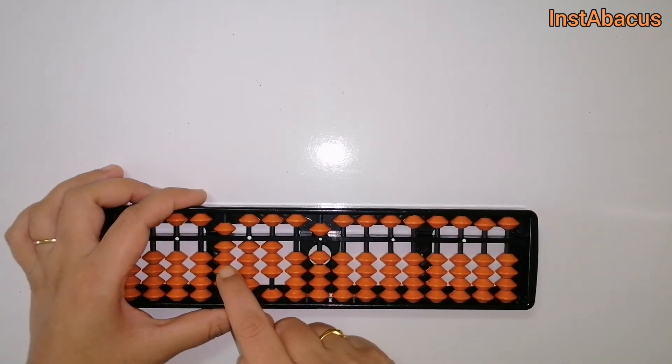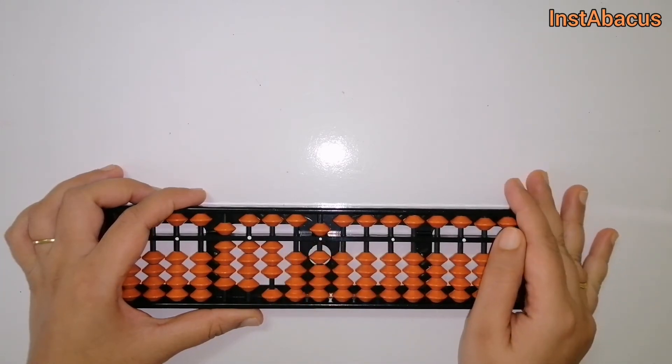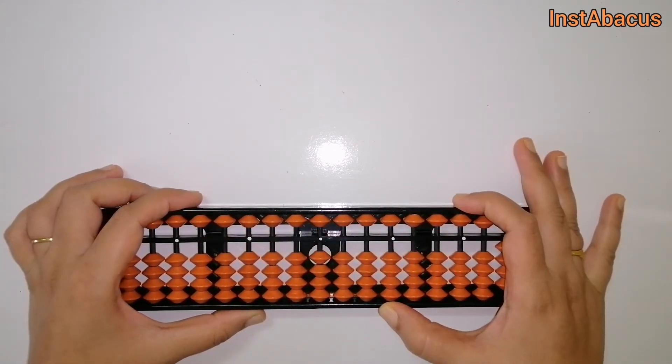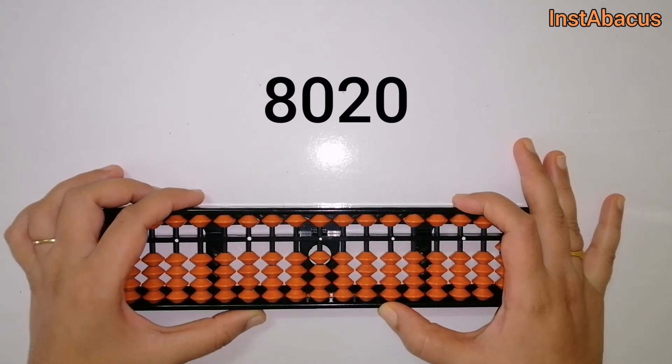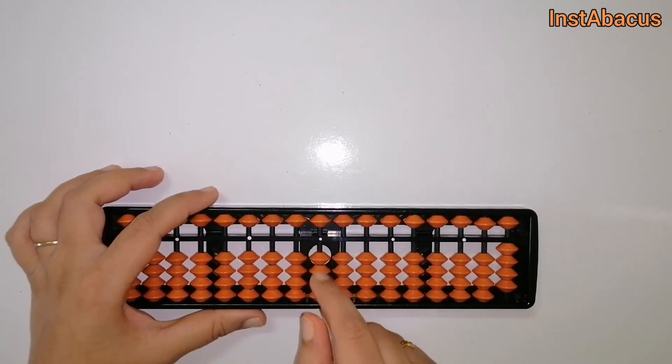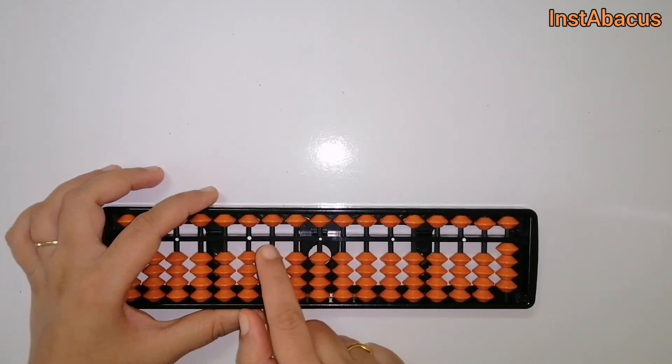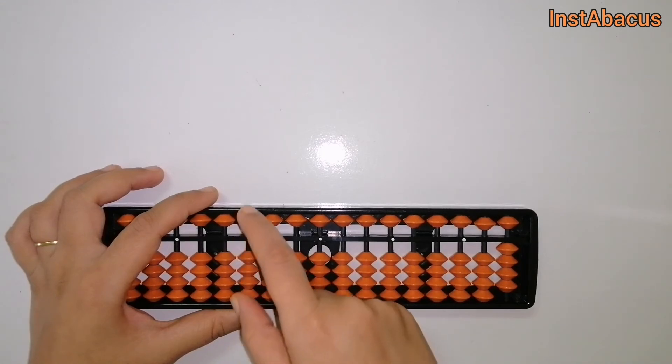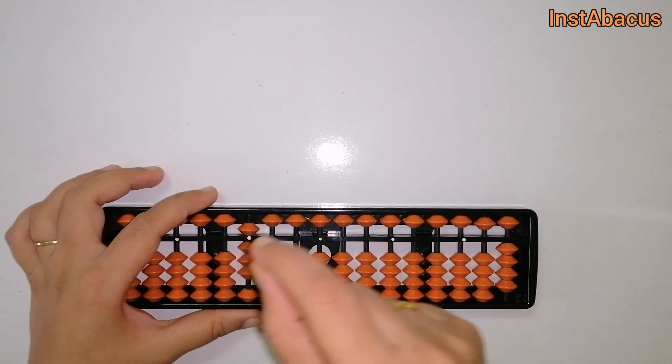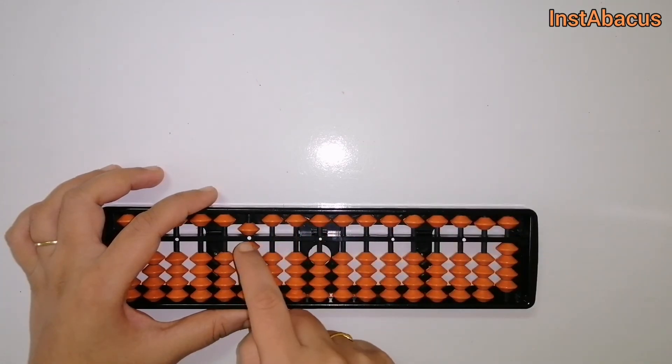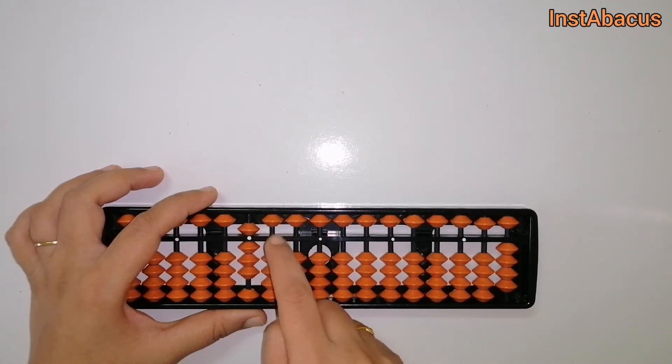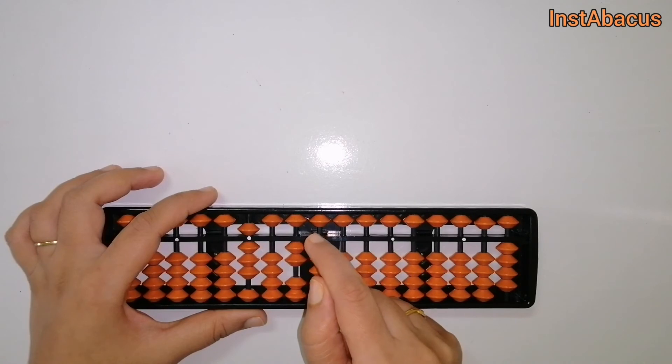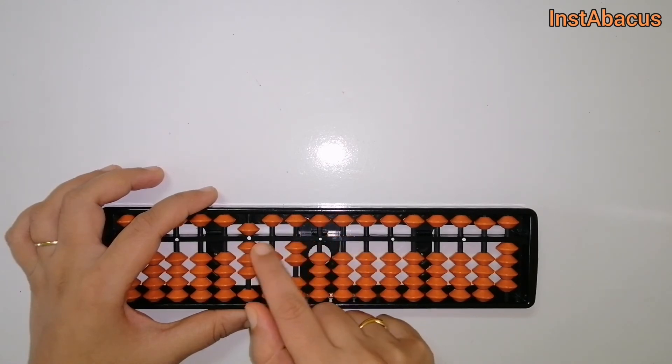One more: 8,020. From the units place, we will start setting our number from the thousands place. We have come to the thousands rod here. Now it becomes 8,000 - this is 8 on our abacus in the thousands place. Then nothing in the hundreds place, 2 here, and zero. 8,020.